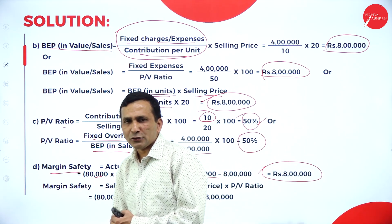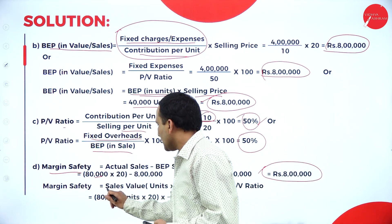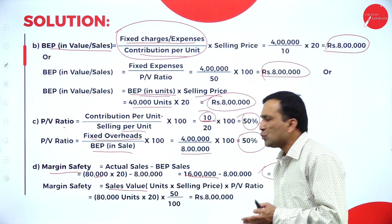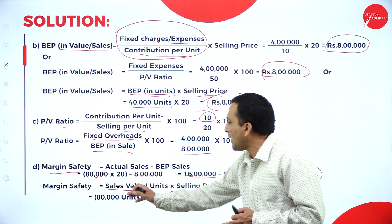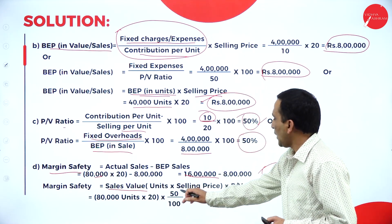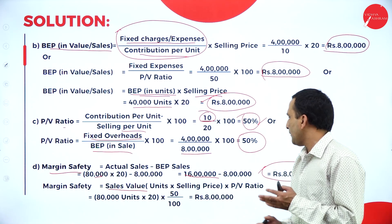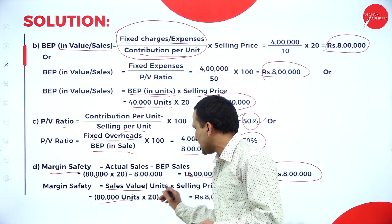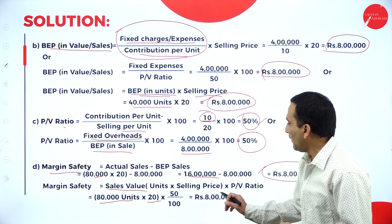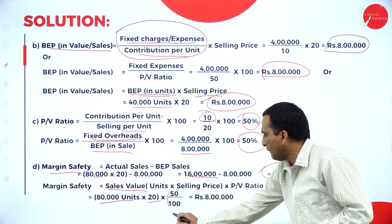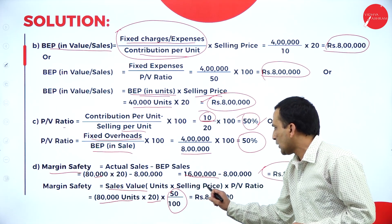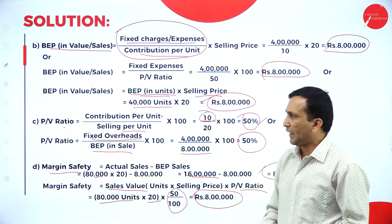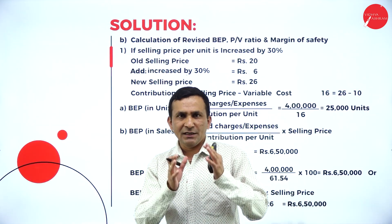There is one more formula for margin of safety: sales value × PV ratio, where sales value = number of units × selling price. So 80,000 × ₹20 = ₹16 lakh, then × 50% PV ratio = ₹8 lakh. The same answer is obtained. This completes the calculations based on normal selling price.